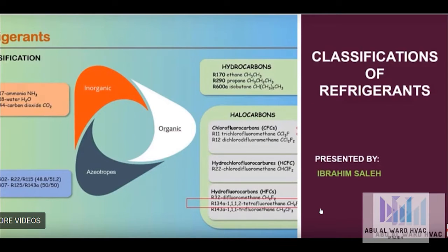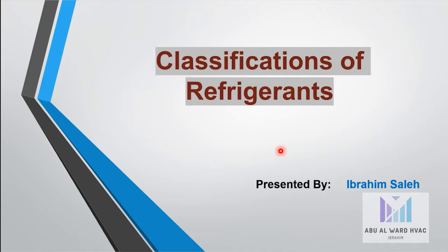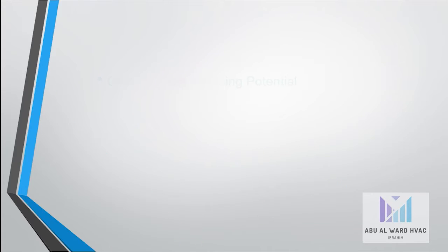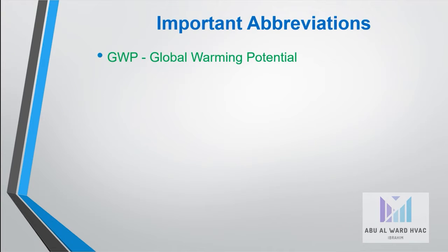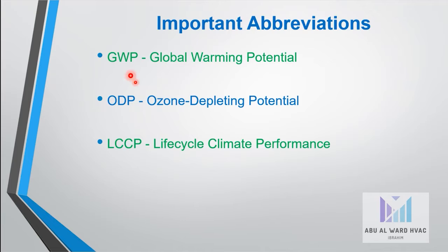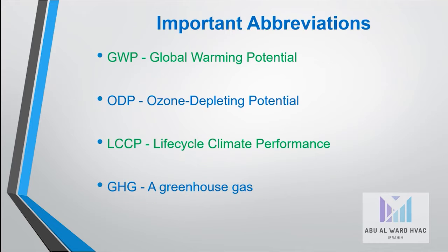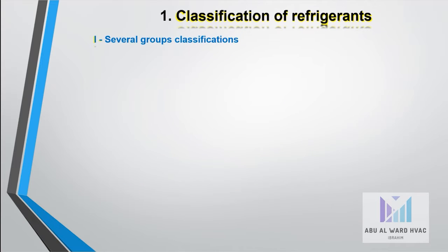In this video we are going to talk about different groups of refrigerants according to the classifications, mainly by ASHRAE. Before we begin, we have important abbreviations: GWP - global warming potential, ODP - ozone depletion potential, LCCP - lifecycle climate performance. GWP and ODP are very important, as all refrigerants depend on them. GHG stands for greenhouse gas, and OEL is occupational exposure limit.